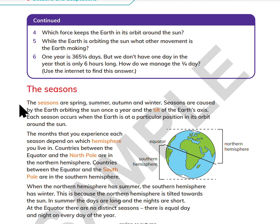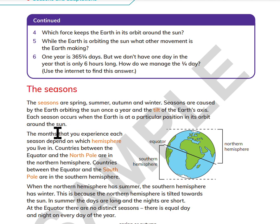The Seasons are spring, summer, autumn, and winter. Seasons are caused by the Earth orbiting the Sun once a year and the tilt of the Earth's axis. Each season occurs when the Earth is at a particular position in its orbit around the Sun. The months that you experience each season depend on which hemisphere you live in. Countries between the equator and the North Pole are in the Northern Hemisphere. Countries between the equator and the South Pole are in the Southern Hemisphere.